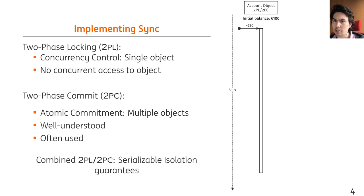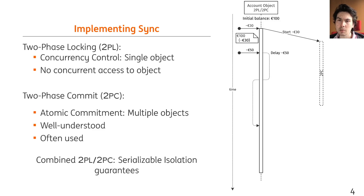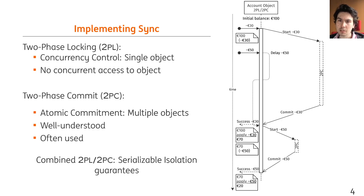On the right side, we see a sequence diagram of an account object implemented using two-phase locking and two-phase commit. First, a withdrawal of 30 euros arrives at the bank account. The invariant here is that balance should not go below zero. The operation is valid because enough balance is initially available. The two-phase commit transaction is started, but before the account can actually apply the operation's effects and deduct the balance, the transaction manager has to wait on other transaction participants for approval. Meanwhile, a second operation comes in, but this one has to be delayed because the account is locked. When the first operation commits, the effects can be applied, and now the second operation can start processing. When it also commits, the effects are applied as well.